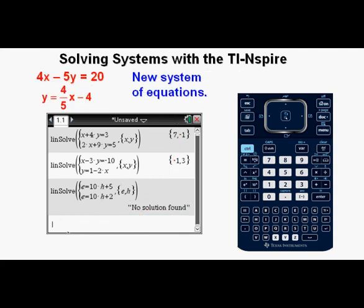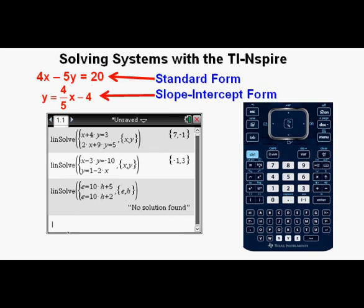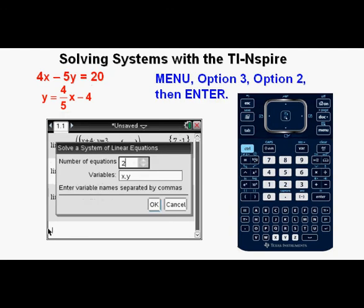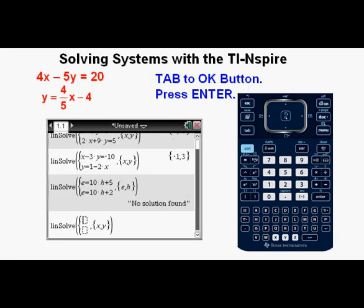Let's look at this system of equations. We have 4x minus 5y equals 20 and y equals 4 fifths x minus 4. Again, we have one equation in standard form and another in slope-intercept form. From here, we go to input our system of equations by going to menu down to option 3, algebra, then to option 2, solve system of linear equations, then enter. Since we have two equations, tab down to the OK button, then press enter.